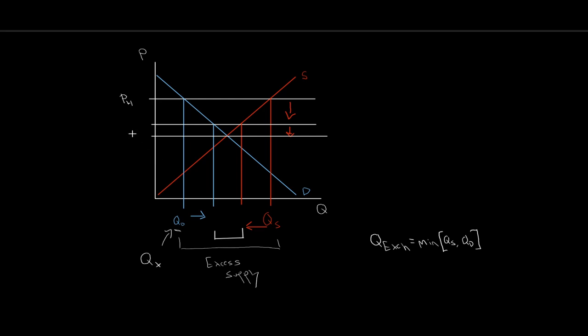Eventually we arrive at a price where quantity demanded equals quantity supplied. There's no longer any excess supply, no longer any reason for the producer to push the price down further. We have a stable outcome — we have found balance — we have equilibrium.